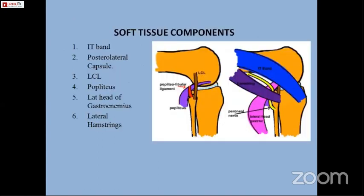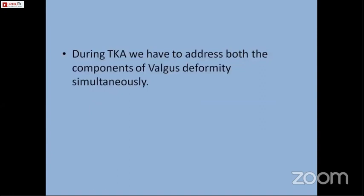These are the tight structures on the concave or lateral side of the knee, starting from the iliotibial band, posterolateral capsule, gastrocnemius, lateral collateral ligament, popliteus, and in severe cases, the muscular components of gastrocnemius and lateral muscles. During addressing these cases for total knee replacement, we have to address both bony and soft tissue deforming forces simultaneously.